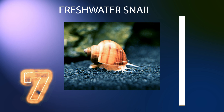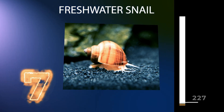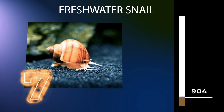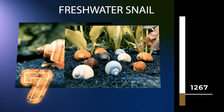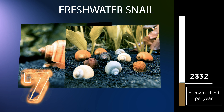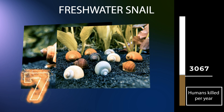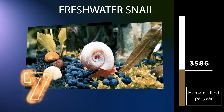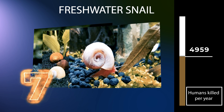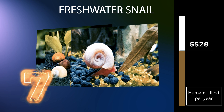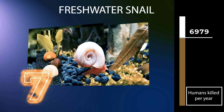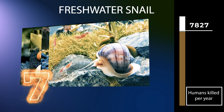Freshwater snails are gastropod mollusks that live in freshwater. There are many different families, found throughout the world in various habitats, ranging from ephemeral pools to the largest lakes, and from small seeps and springs to major rivers. The great majority of freshwater gastropods have a shell, with very few exceptions. Some groups respire using gills, whereas others need to reach the surface to breathe air. In addition, some are amphibious and have both gills and a lung, for example, Ampullaria. Most feed on algae, but many are detritivores and some are filter feeders.